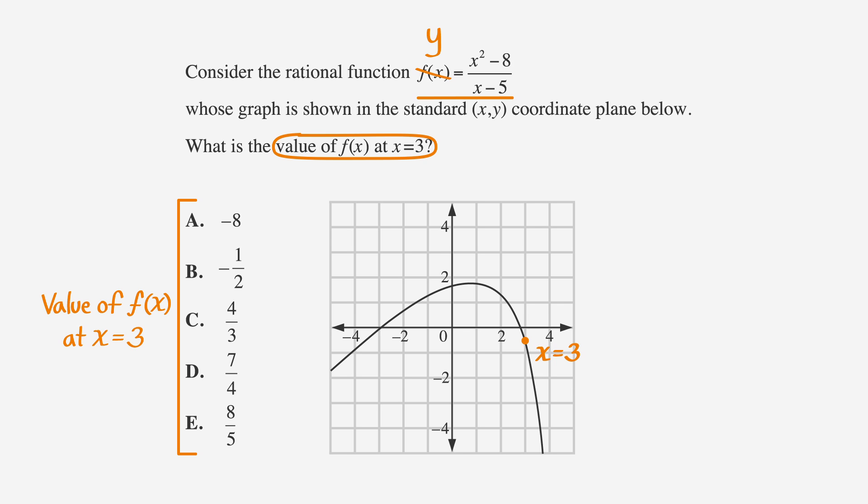If we look at the graph, we can find the point where x equals 3 and then draw a horizontal line to the y axis to find the value of y when x equals 3. In this case, it's difficult to figure out the actual value of y from the graph alone. It looks like the answer is somewhere between y equals 0 and y equals negative 1. Let's check out the answer choices and see what works.